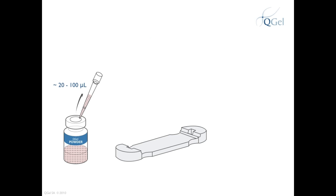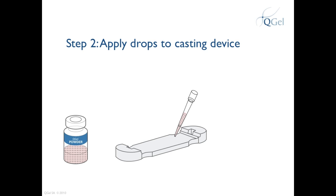Depending on the size of the disk that you want, pipette 20 to 100 microliters of the QGEL cell solution. Apply this drop to the QGEL 3D disk caster.